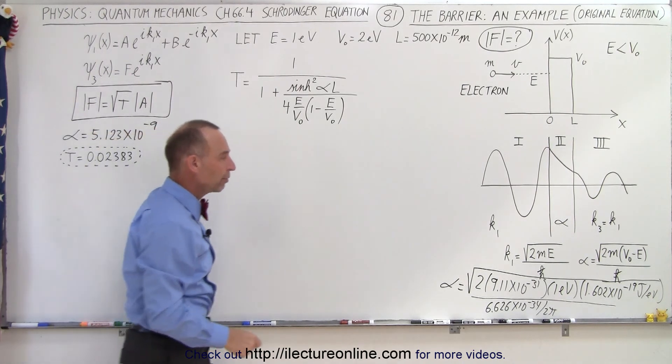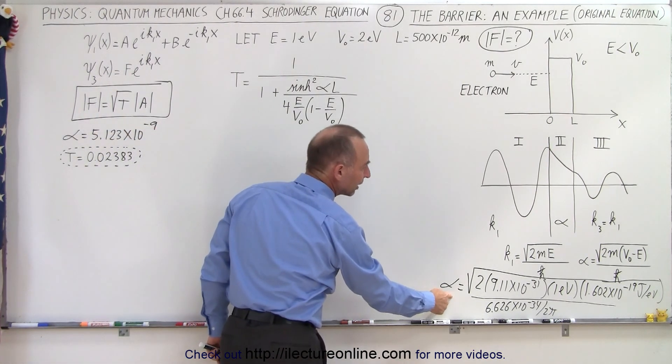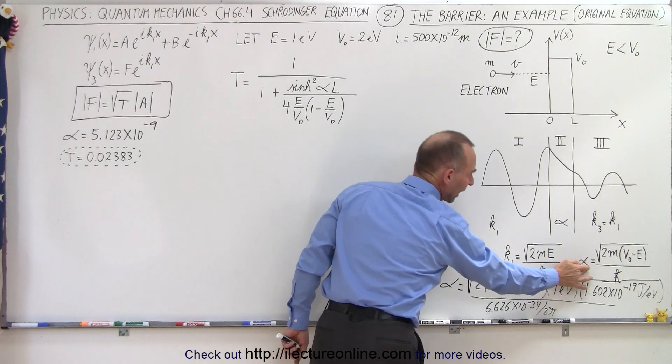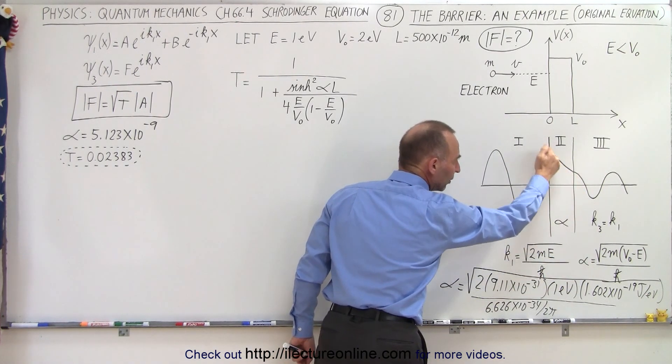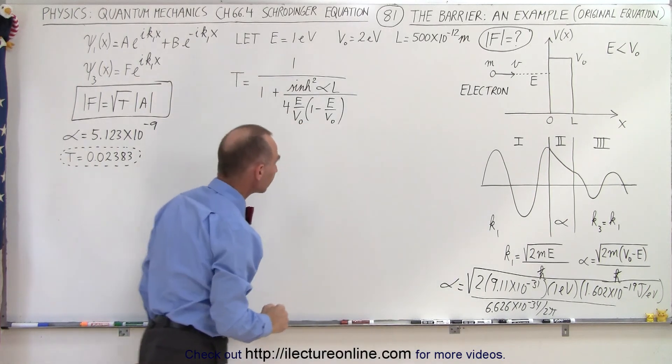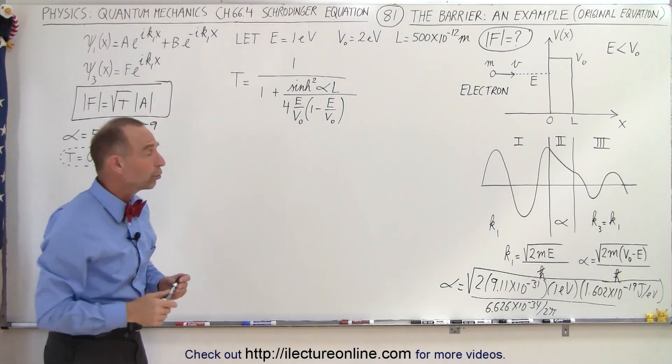We've already calculated the alpha. The alpha was the value we got here which represents the decay constant in the barrier region. So let's go ahead and plug in what we know so far.